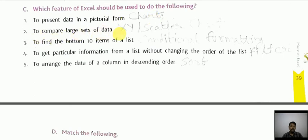To compare large sets of data, that is XY or scatter chart. Next, to find the bottom 10 items of a list, it is conditional formatting. Next, to get particular information from a list without changing the order of the list, that is filter.